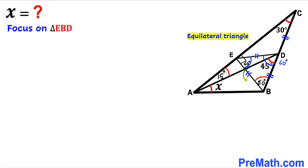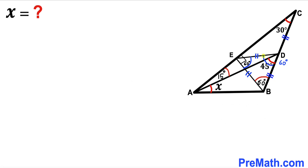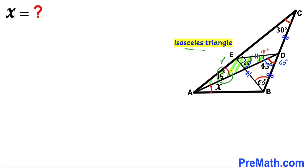Now let's make an observation. We know that angle EBD is 60 degrees and angle ABD — equivalently angle ADB — is 45 degrees. Therefore, the remaining angle EDA equals 60 minus 45, which gives us 15 degrees. Now focusing on triangle EAD, we can see it is an isosceles triangle since angle EAD is 15 degrees and angle EDA is 15 degrees as well.